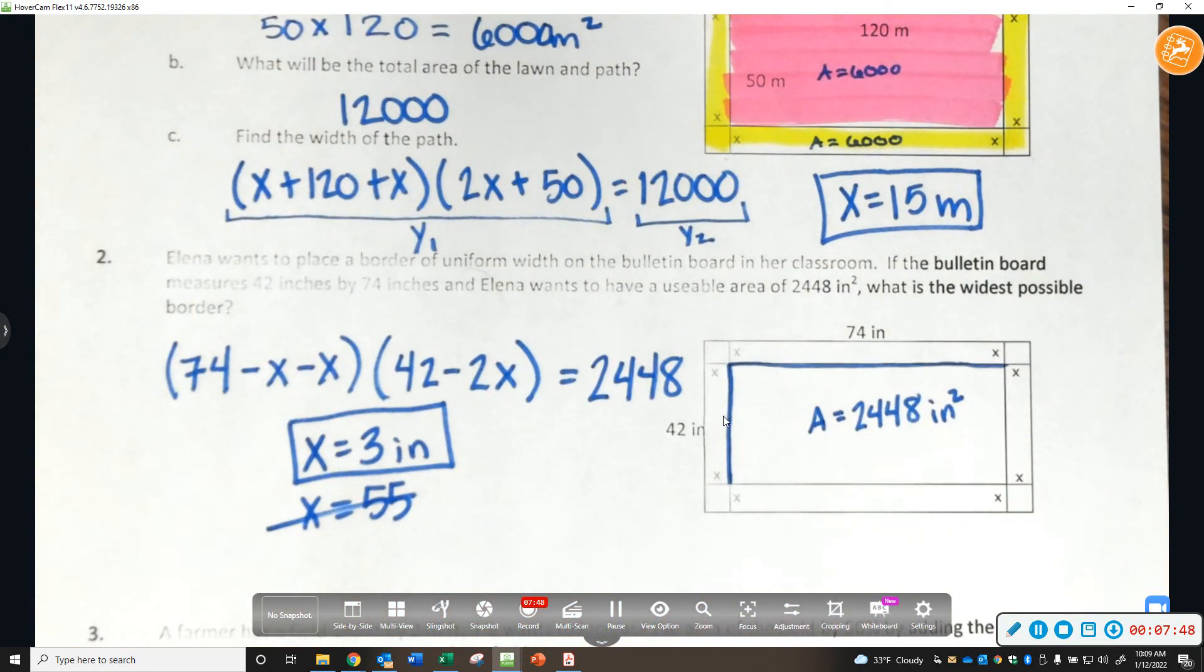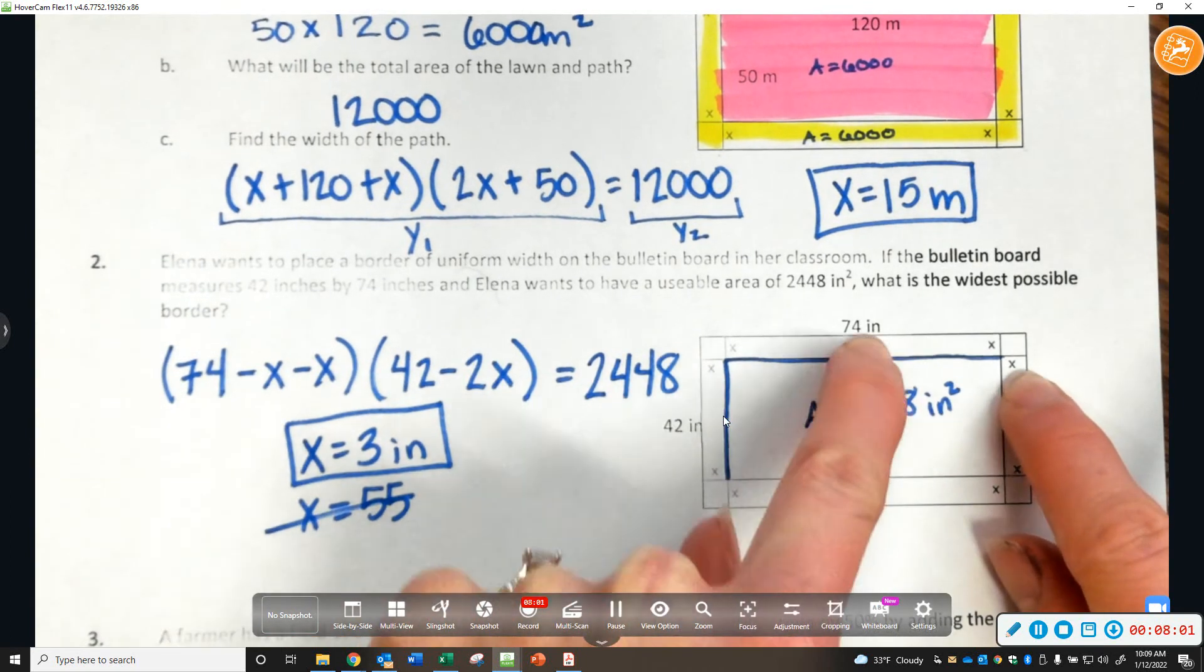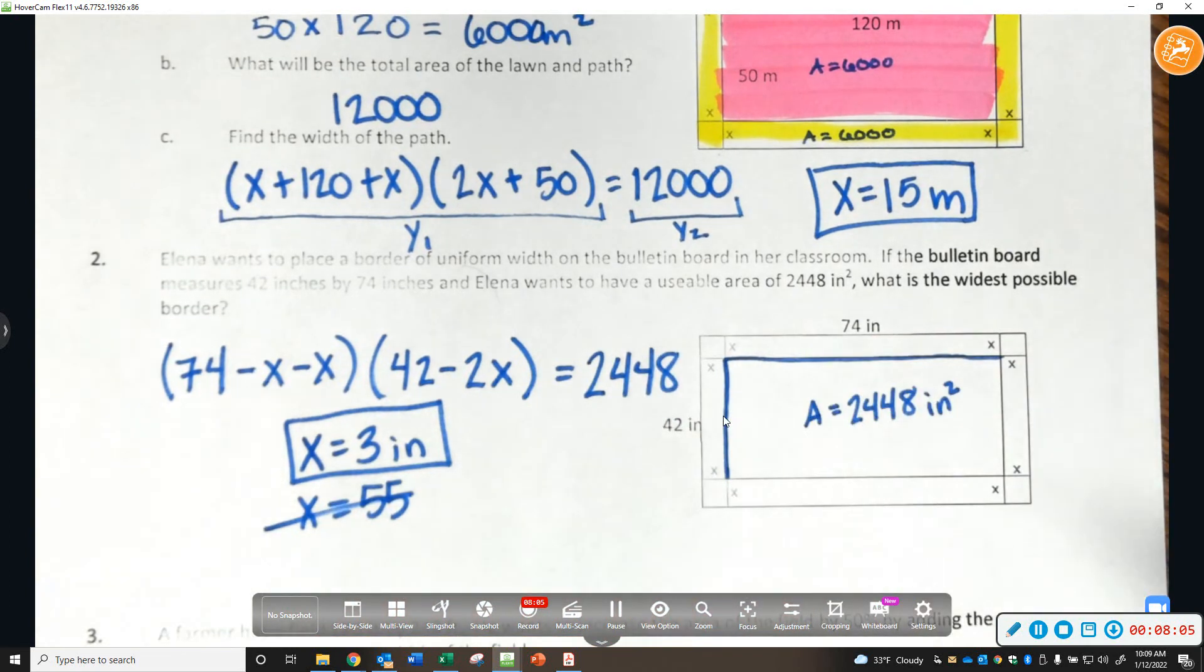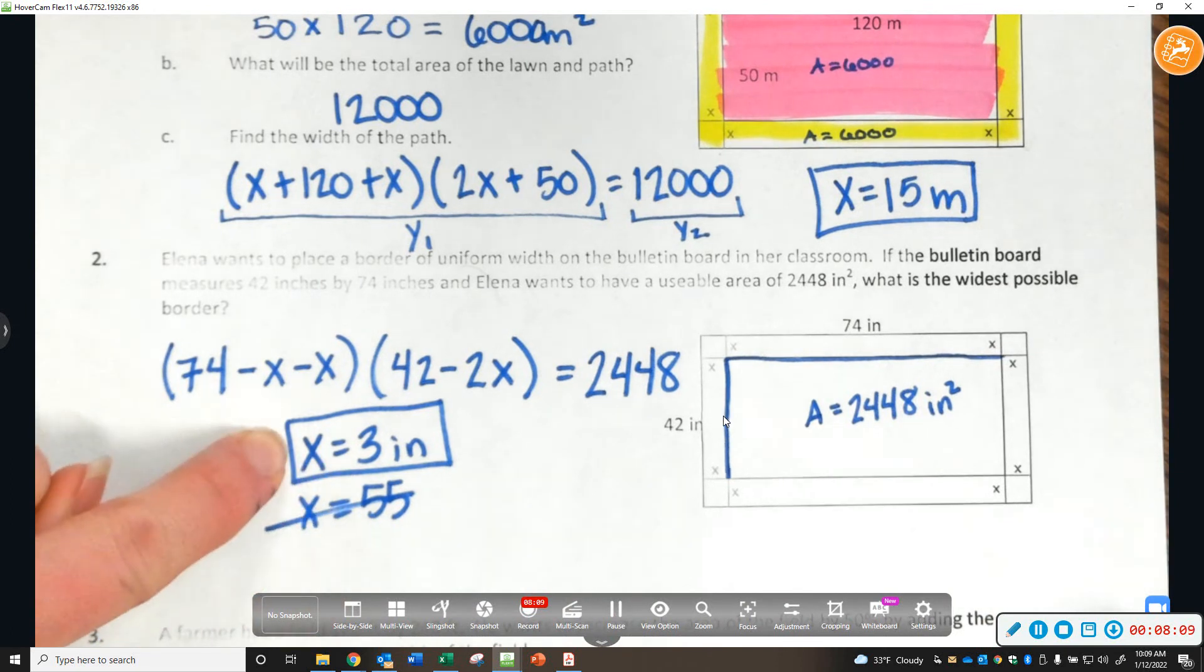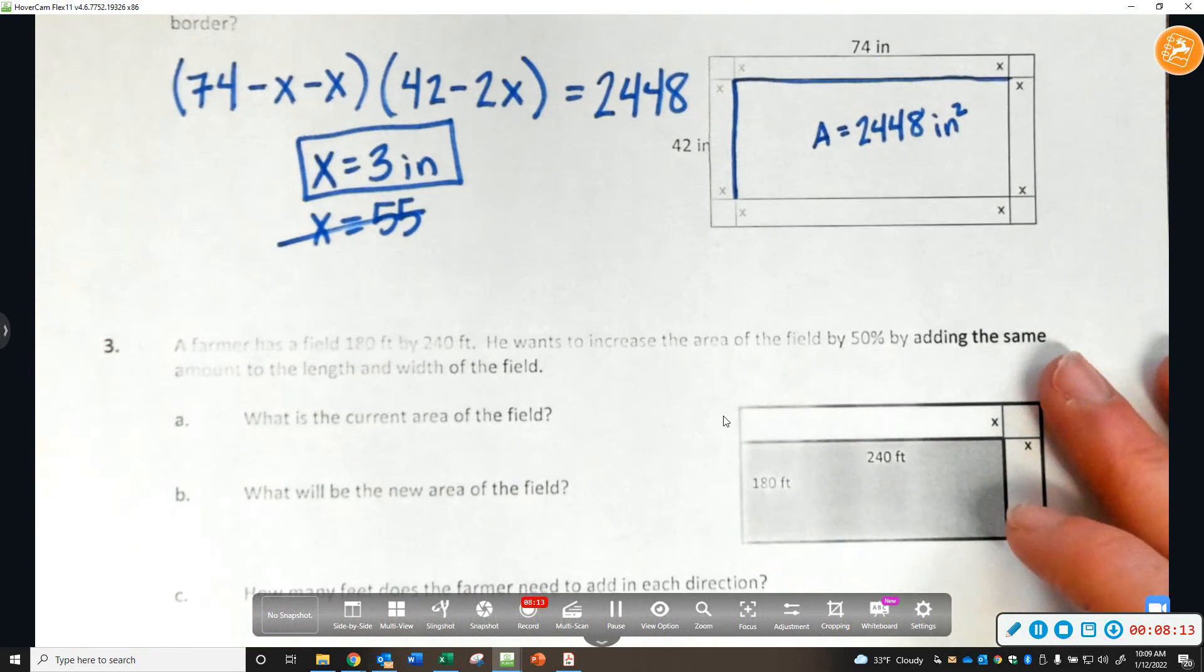So, if you get multiple answers, you have to go back and look at your picture to see, does that make sense? And in this case, that does not make sense. Even 55 and 55 add up to 110. Well, you only have 74 inches. So, that does not make sense to be the width of your border. The only one that makes sense is 3.